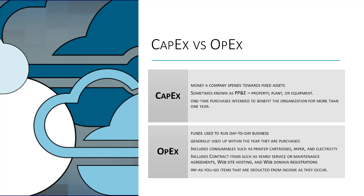OPEX also covers pay-as-you-go items that show up on a company's profit and loss statement, and these are deducted from income as they occur.